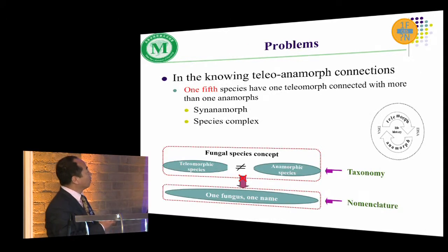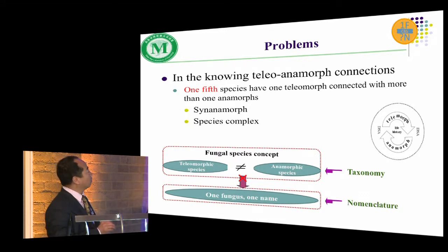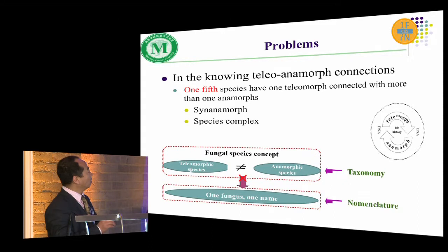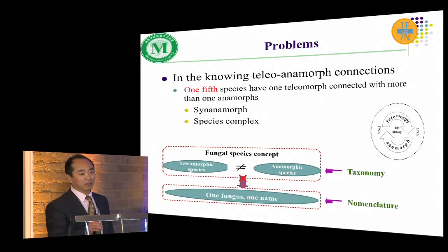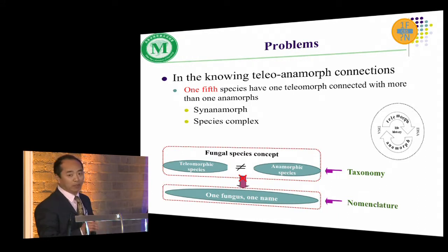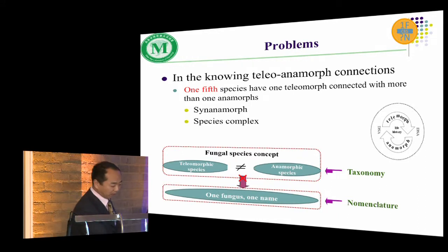This is a database of telemorph and anamorph collections, and one-fifth of species has one telemorph connected with more than one anamorphic species.